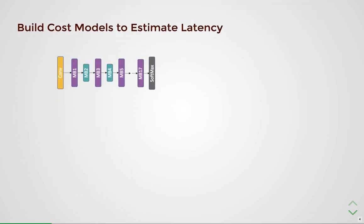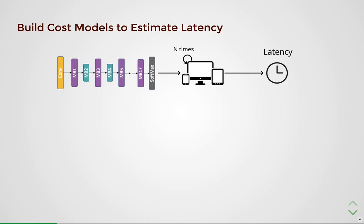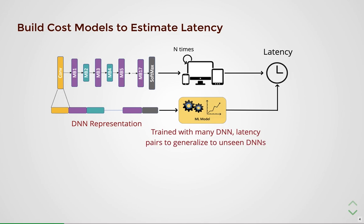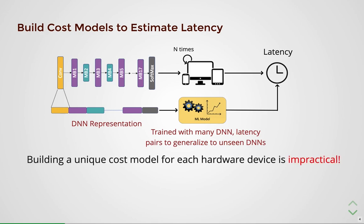Conventionally, the latency of a DNN is characterized by executing it on a device multiple times to get a reliable average latency. In the case of latency cost models, the pipeline involves providing the representation of the network as input to a machine learning model that estimates the latency on that device. This model is trained with a training dataset of many network-latency pairs to make accurate predictions. Cost models are really useful in estimating latencies of unseen DNNs on a given hardware device without explicitly characterizing them. However, we still need to build unique models for each device, which is very impractical given the huge variety of device platforms.